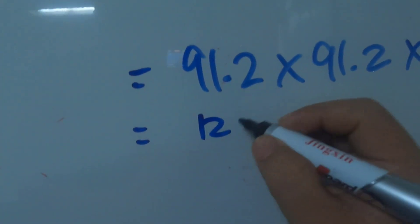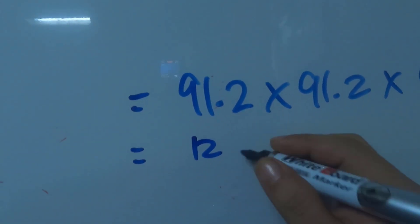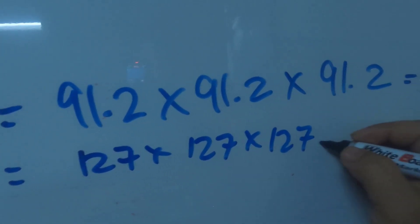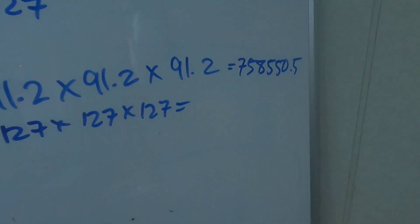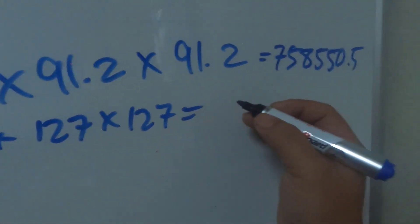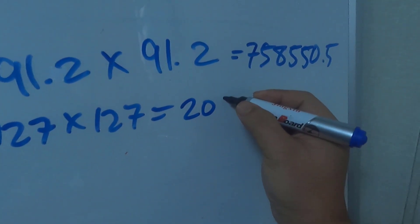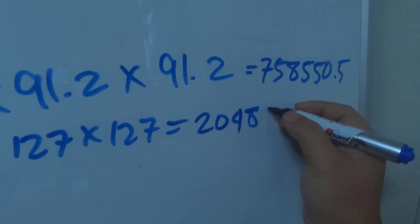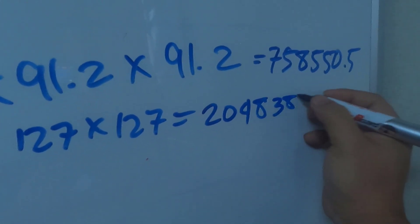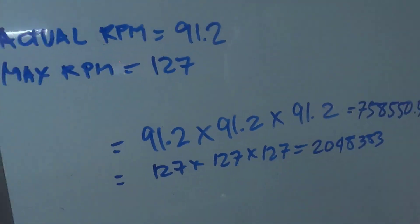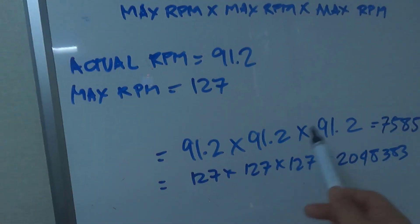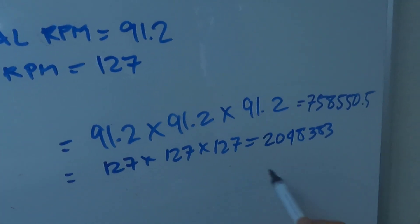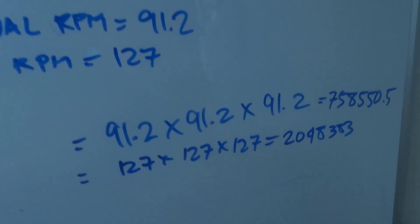Then, maximum rating — maximum RPM: 107 × 107 × 107 is equal to 1,225,043. Kaya yun — 91.2 × 91.2 × 91.2 ito yung answer nya, then 107 × 107 × 107 ito din yung answer nya.